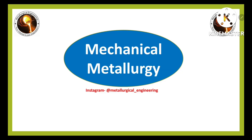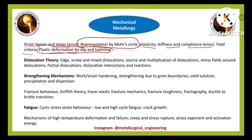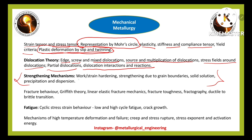The fifth part is mechanical metallurgy. Its syllabus includes strain tensor and stress tensor representation, Mohr's circle — important for numerical problems — elasticity, stiffness and compliance tensors, yield criteria, and plastic deformation by slip and twinning, from which you will definitely get one objective question. Dislocation theory covers edge, screw, and mixed dislocations, sources and multiplication of dislocations, stress field around dislocations, partial dislocations, and dislocation interactions and reactions. Strengthening mechanisms — a most important topic — include work or strain hardening, grain boundary strengthening, solid solution strengthening, precipitation strengthening, and dispersion strengthening, yielding one or two problems.